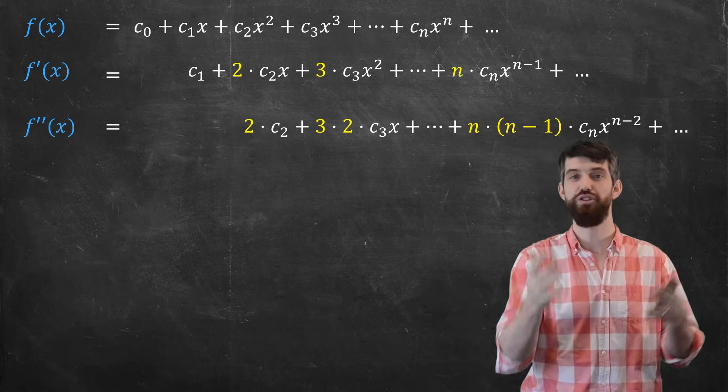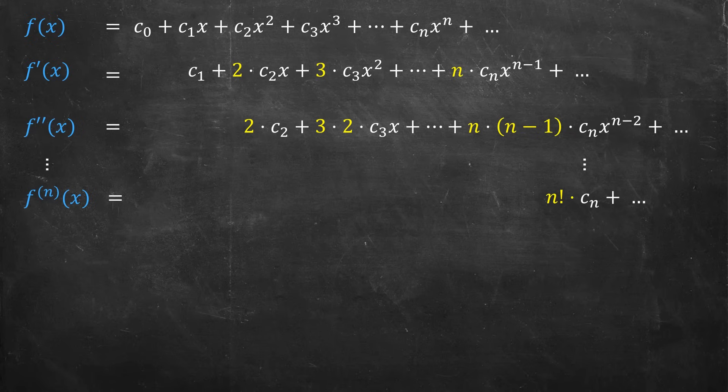If I take the nth derivative now, all the lower order terms, the terms where the power of x was less than n, all of those have had enough derivatives that they go to zero. For the nth term itself, the x to the n, first hang down the n, then the n-1, then the n-2. In general, this is an n factorial when I do it n times. That's just multiplied by the cn. The x goes away. And then I have a whole bunch of more higher order terms where the x's remain.